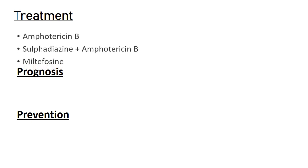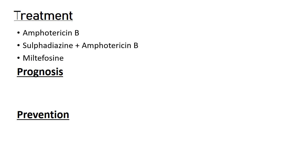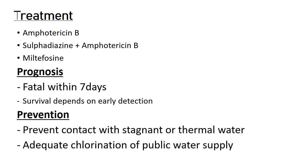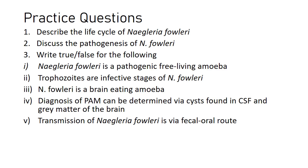Treatment options include amphotericin B administered intravenously, intrathecally through the subarachnoid space, or intraventricularly. A combination of sulfadiazine and amphotericin B can also be used, as well as miltefosine. Prognosis is usually fatal within seven days, and survival depends on early detection. Prevention involves avoiding contact with stagnant or thermal water and ensuring adequate chlorination of public water supply.